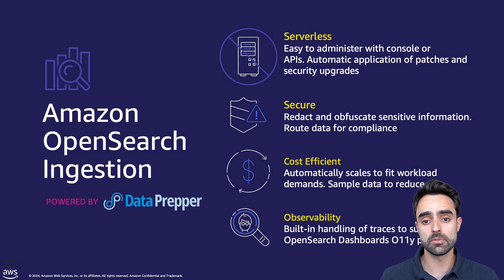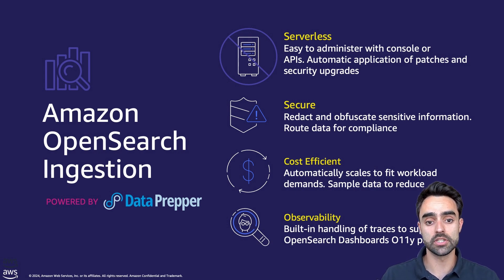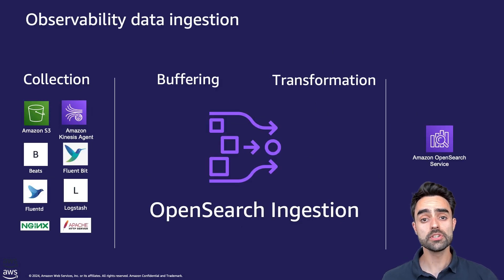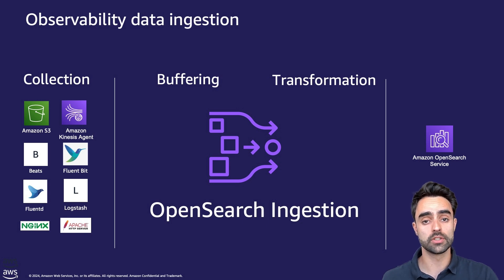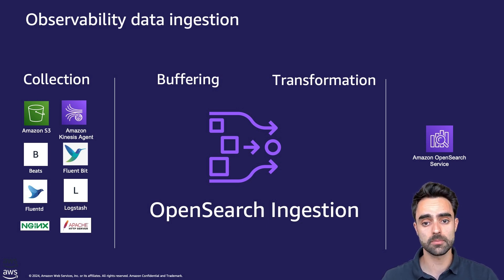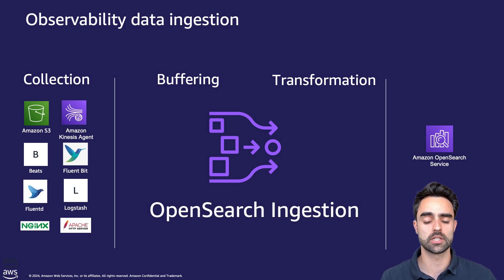You provision ingestion pipelines directly within the AWS management console and OpenSearch ingestion takes care of managing and scaling them. With OpenSearch ingestion, you no longer need to use third-party solutions like Logstash or Jaeger to ingest data into your OpenSearch service domains or OpenSearch serverless collections. You configure your data producers to send data to OpenSearch ingestion and it automatically delivers the data to the domain or collections that you specify.